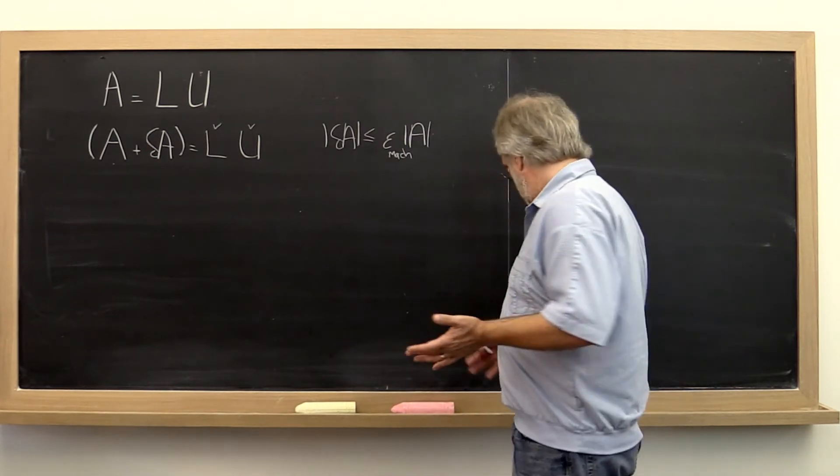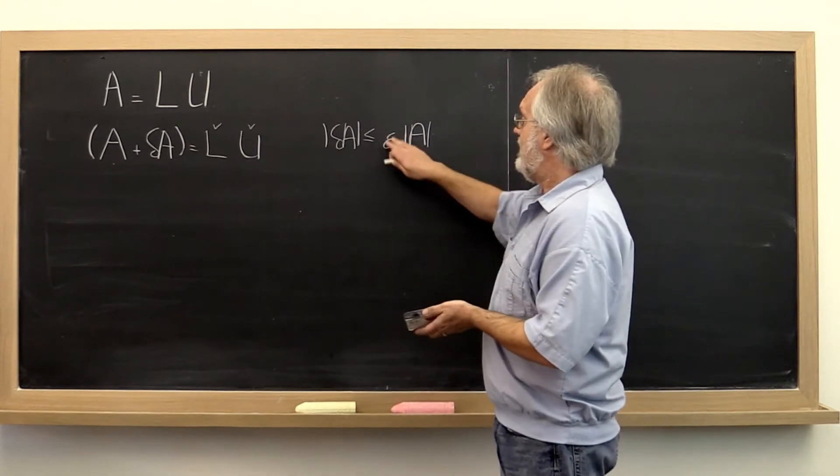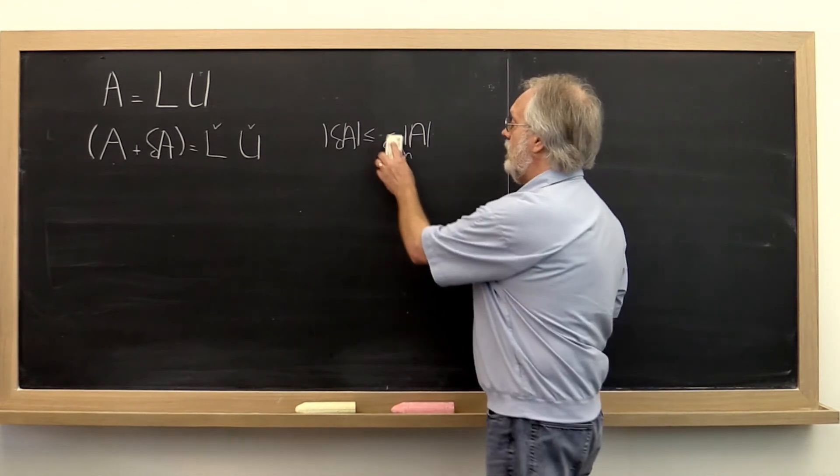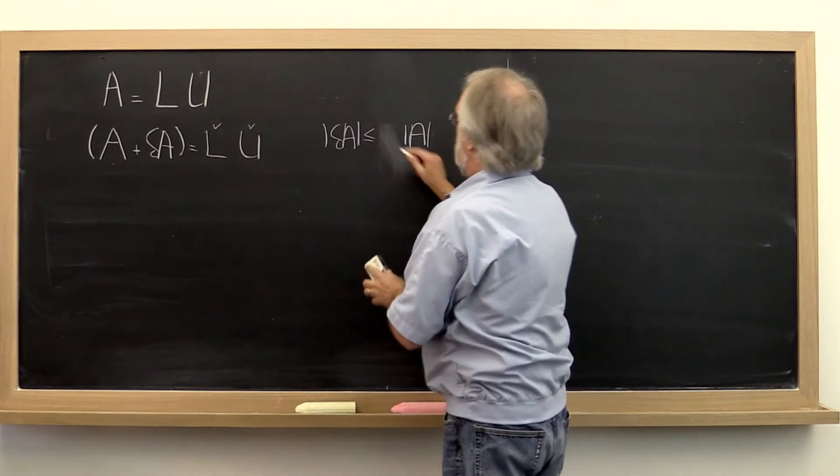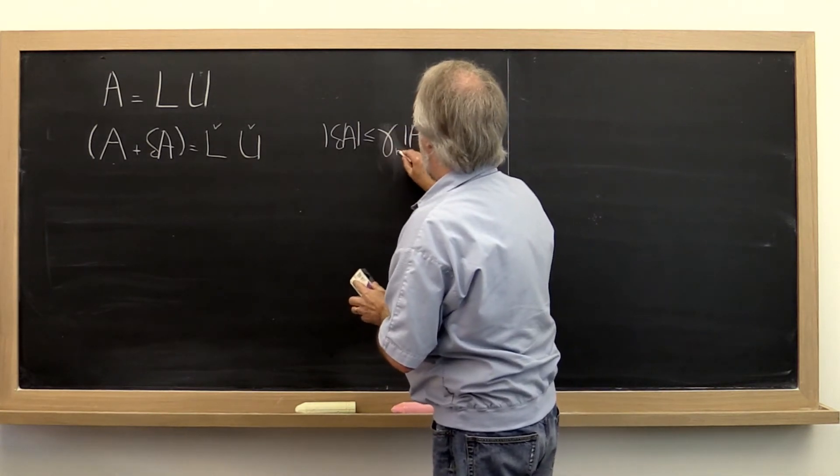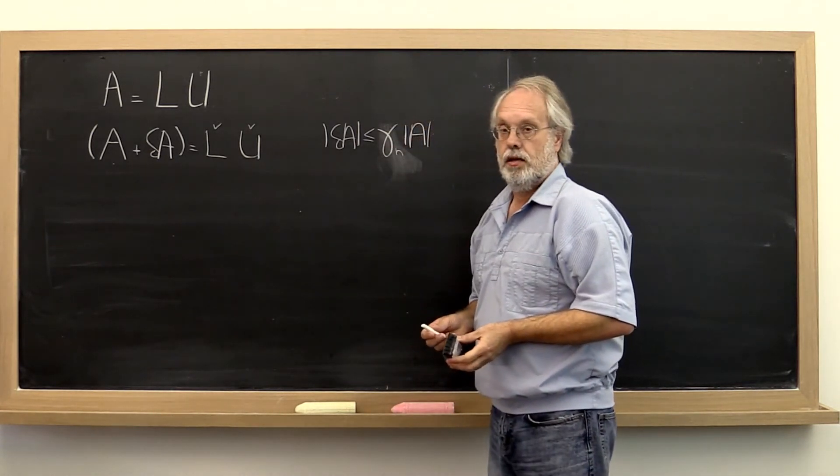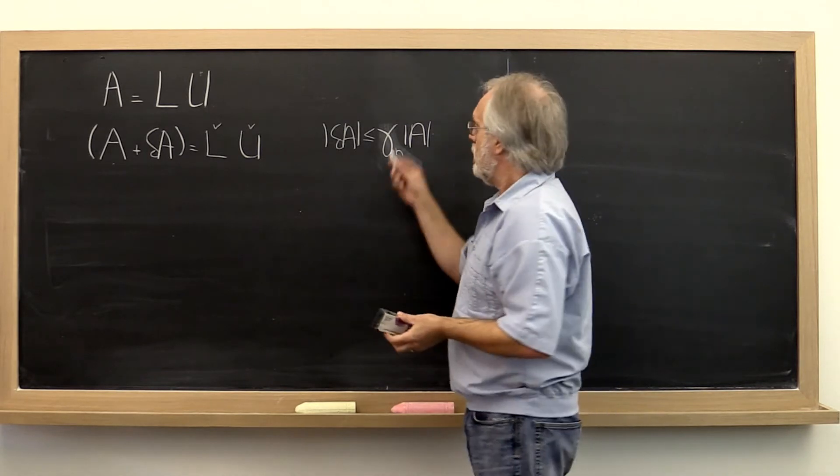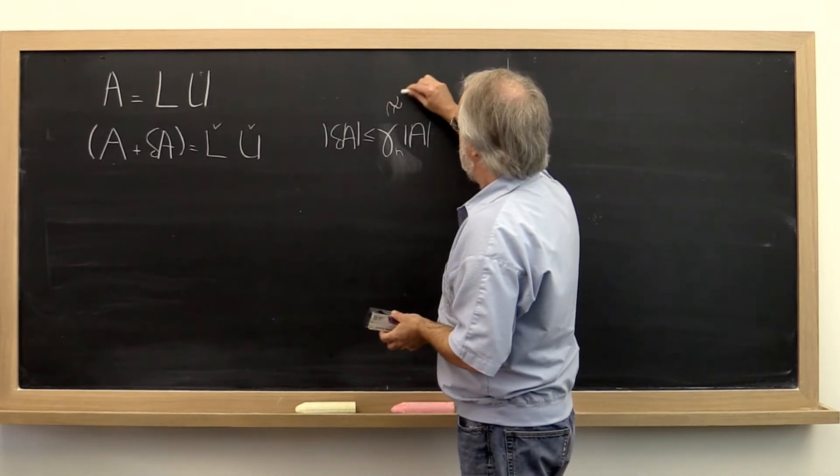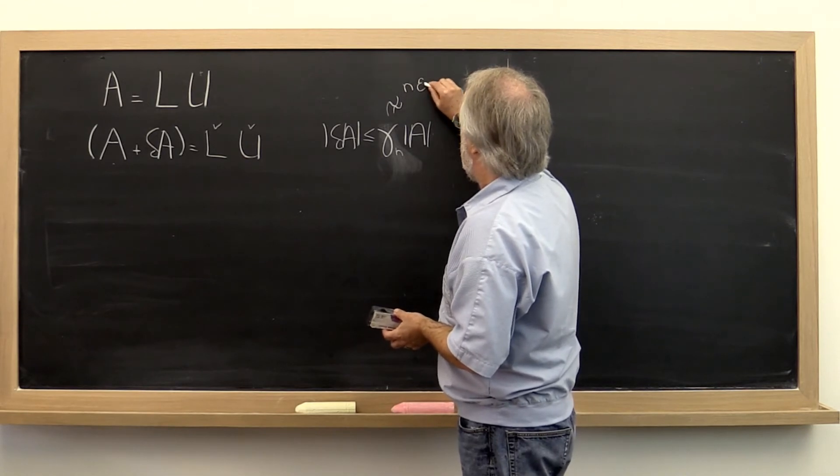Now we've already seen that typically instead of the machine epsilon here, this value gamma sub n comes in. And when n is not too large, gamma sub n is approximately n times the machine epsilon.